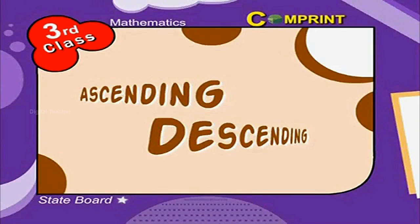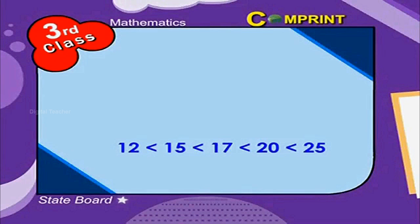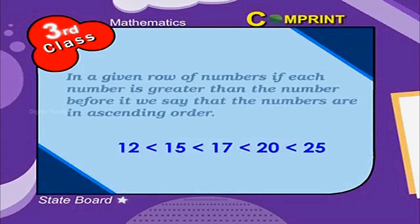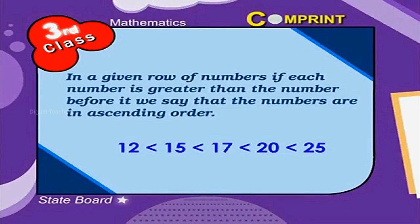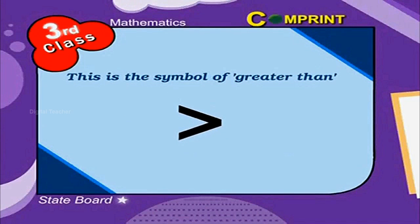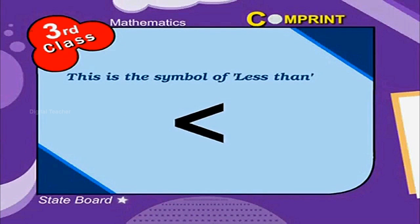Ascending and descending order: in a given row of numbers, if each number is greater than the number before it, we say that the numbers are in ascending order. This is the symbol of greater than, and this is the symbol of less than.